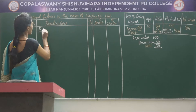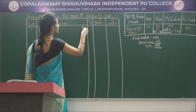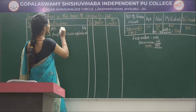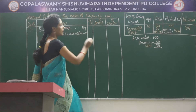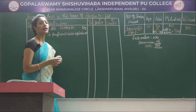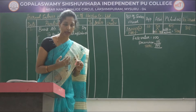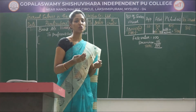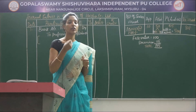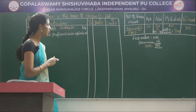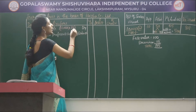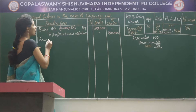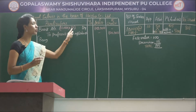The first journal entry is Bank Account debited to Preference Share Application Account. How many shares are issued to the public? 10,000 shares. What is the price on application? Rs 10. So 10,000 into Rs 10 gives Rs 1 lakh. Narration: Being preference share application money received on 10,000 shares at Rs 10 per share.